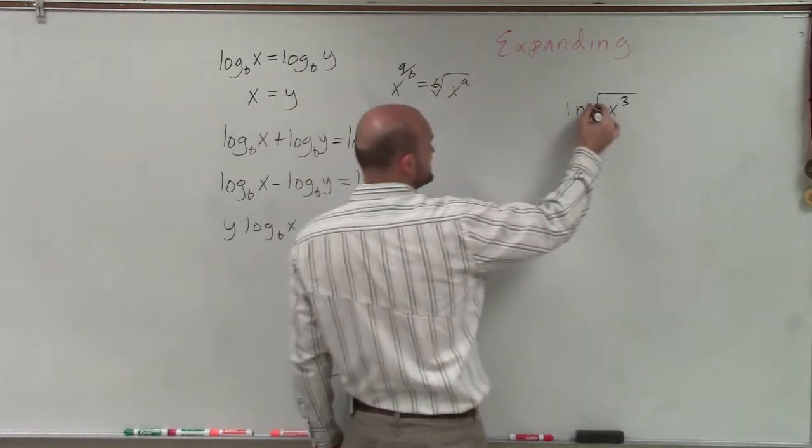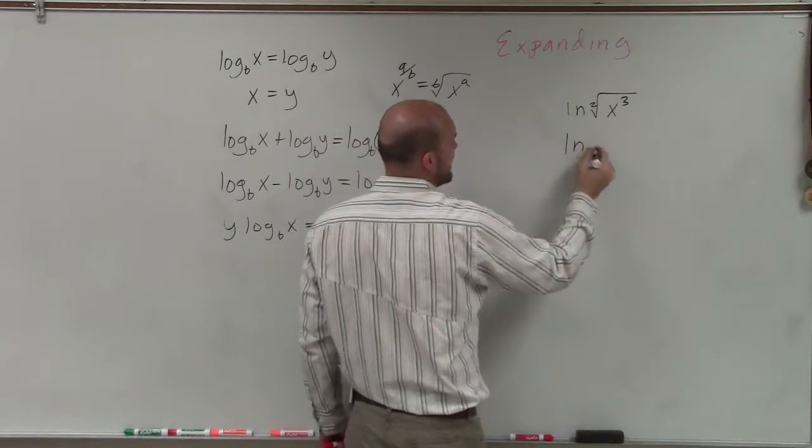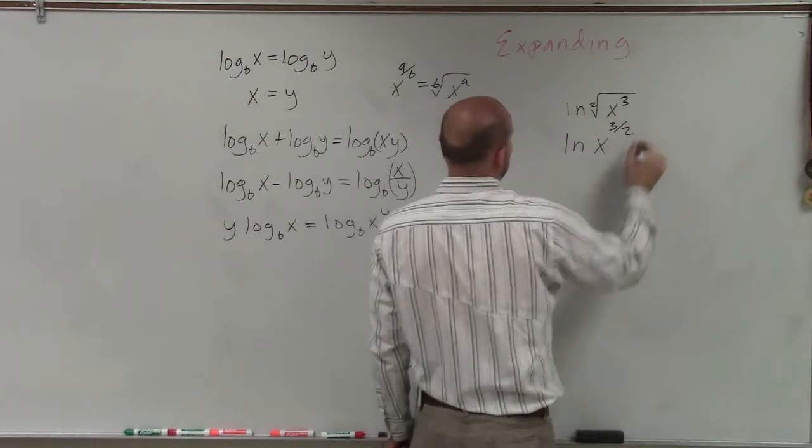So what that's representing is, remember, this is the square root, right? So what I can do is I can rewrite this as ln of x to the 3 halves.